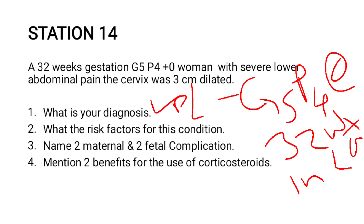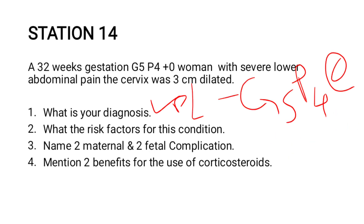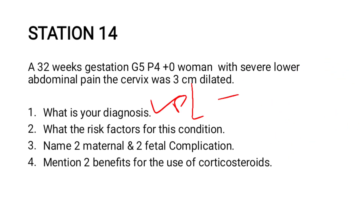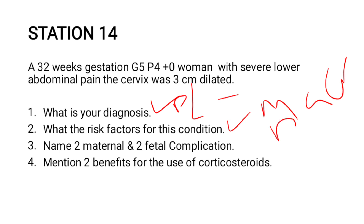The risk factors for preterm labor can include multiple gestation, polyhydramnios, macrosomia, and bacterial vaginosis. Those are some of the key risk factors for this condition.